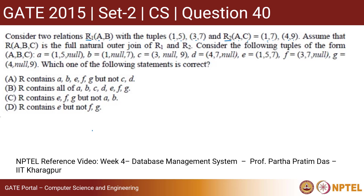Assume that R having attributes A, B, C is the full natural outer join of R1 and R2. Consider the following tuples of the form A, B, C — those tuples are given as A, B, C, D, E, F, and G. Which one of the following statements is correct?